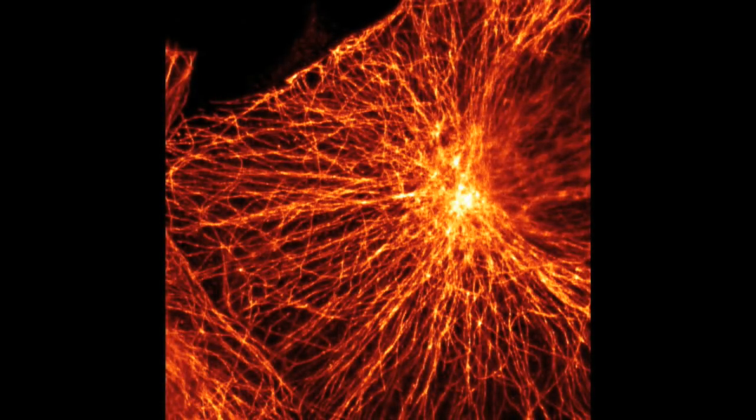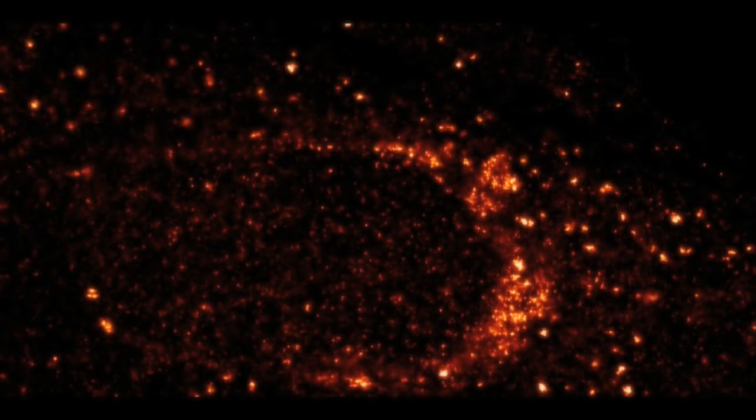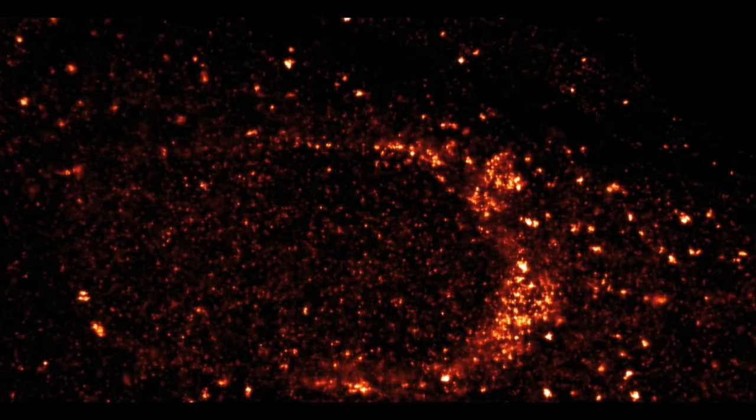This is how microscopes pictured a cytoskeleton previously. STED technology offers a much clearer view. An image of vesicles, containers for transmitters. STED turns it into a tiny cosmos.